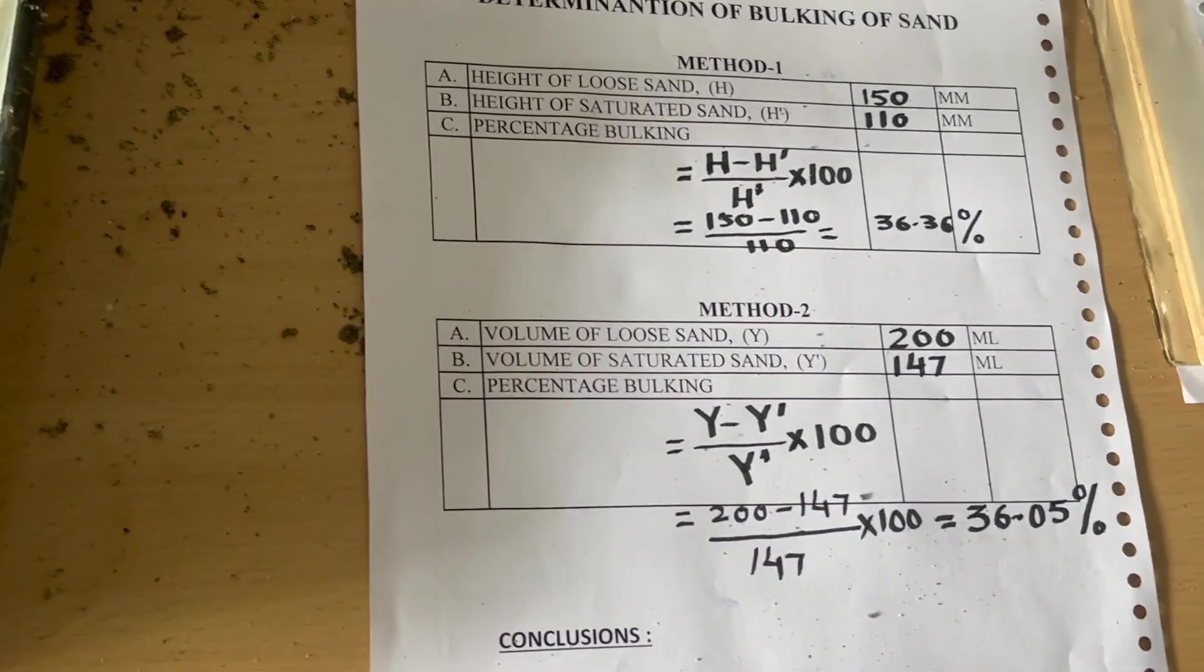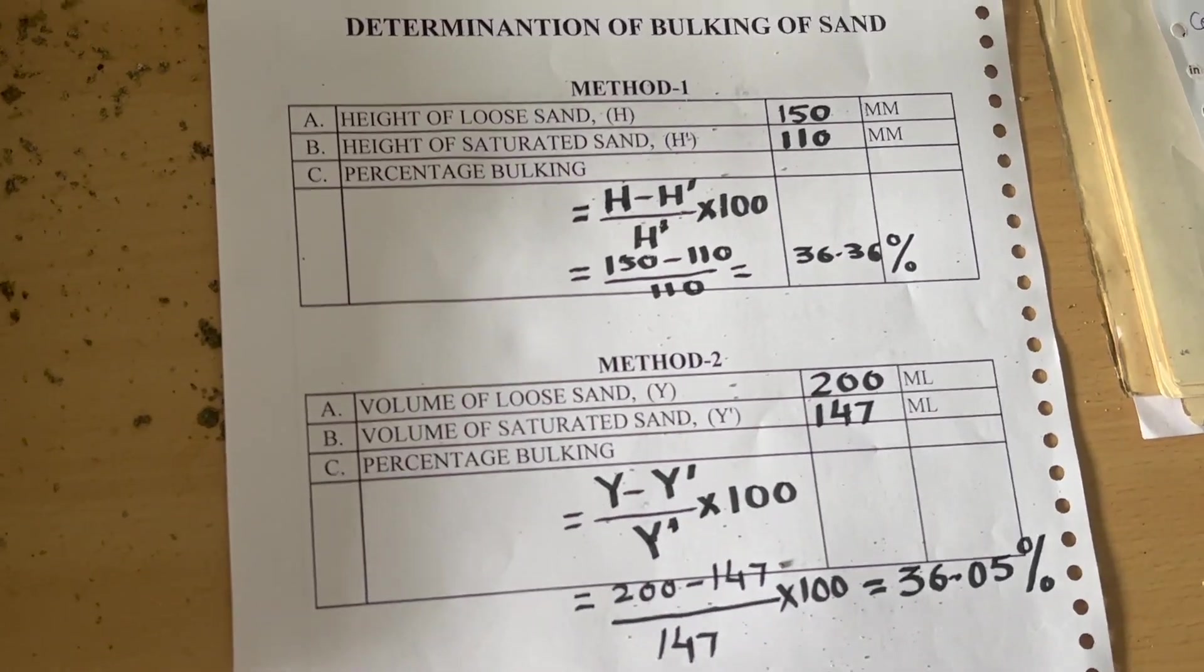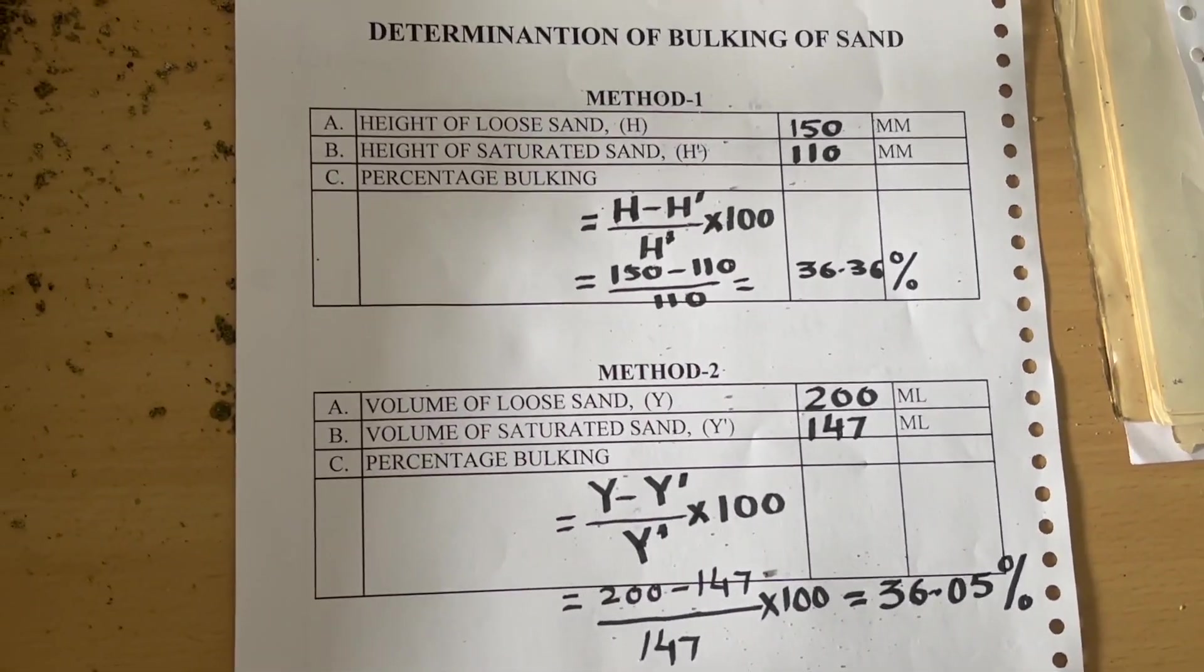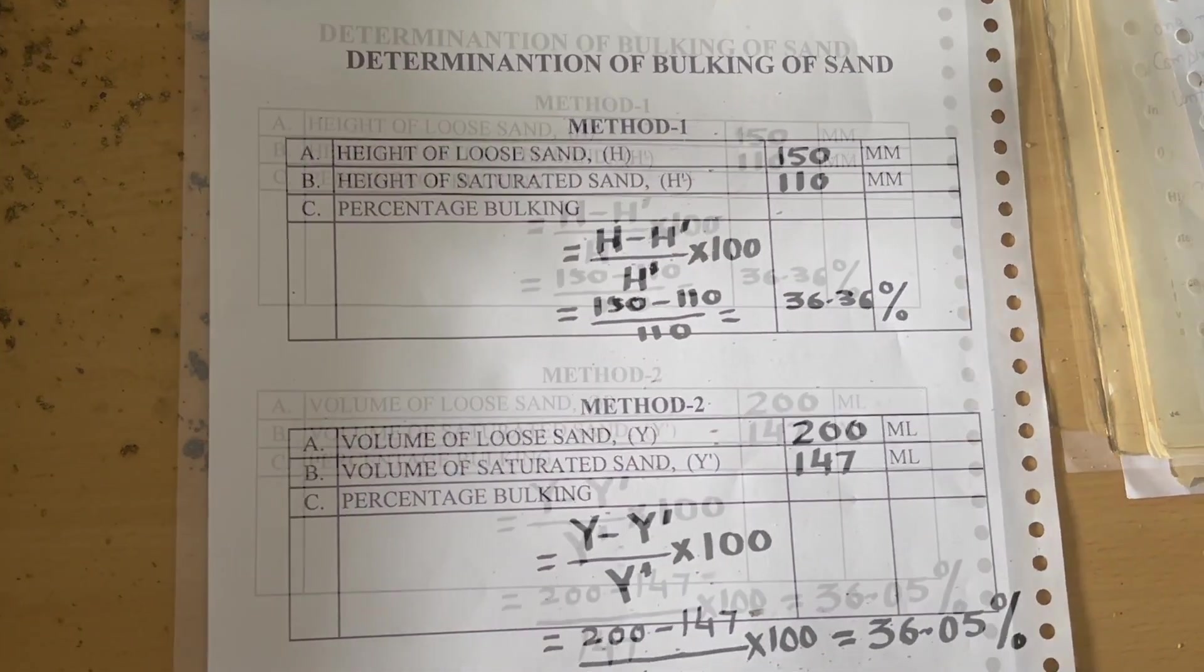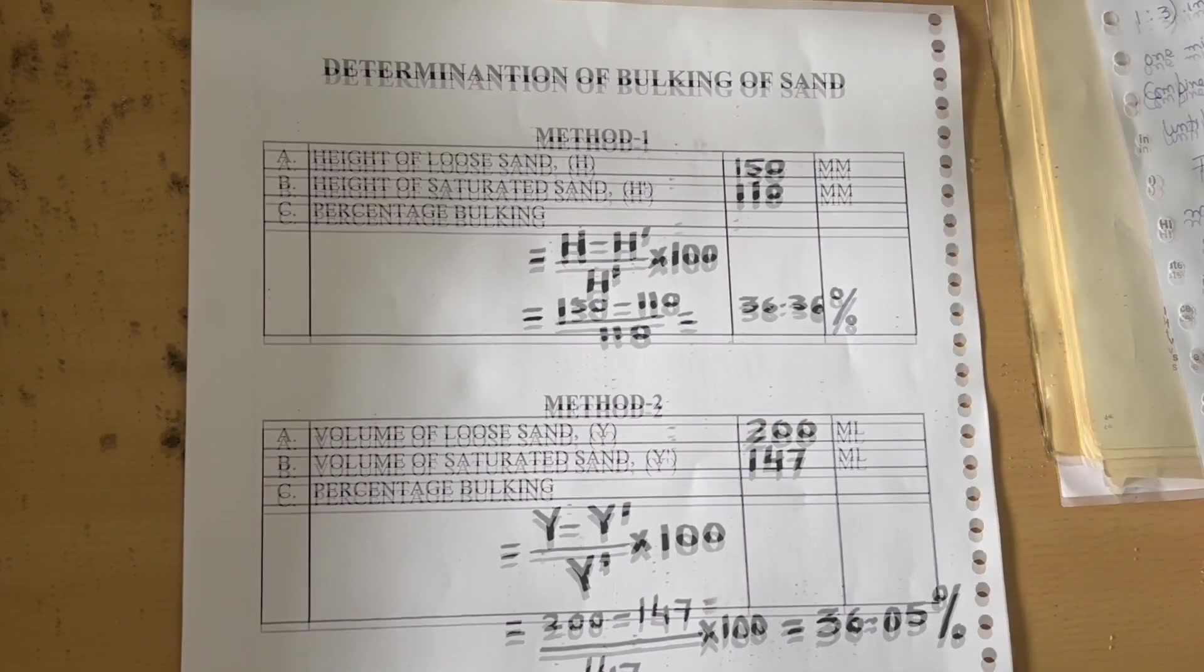What are the effects? It affects when we are measuring the quantities by volume. Fine sand bulks more than coarse sand.